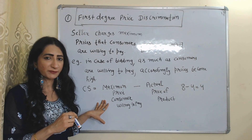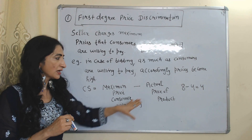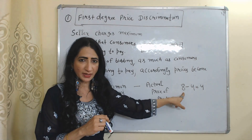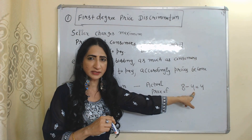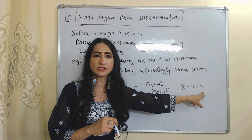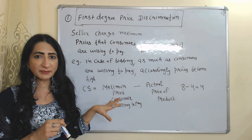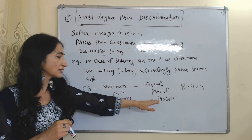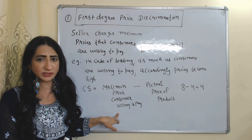Consumer surplus is the difference between the maximum price the consumer is willing to pay minus the actual price of the product. For example, if the maximum price a consumer is willing to pay is eight and the actual price is four, the difference is four — that four is called consumer surplus. But in case of first degree price discrimination, consumer surplus is zero because the actual price is equal to the maximum price the consumer is willing to pay.